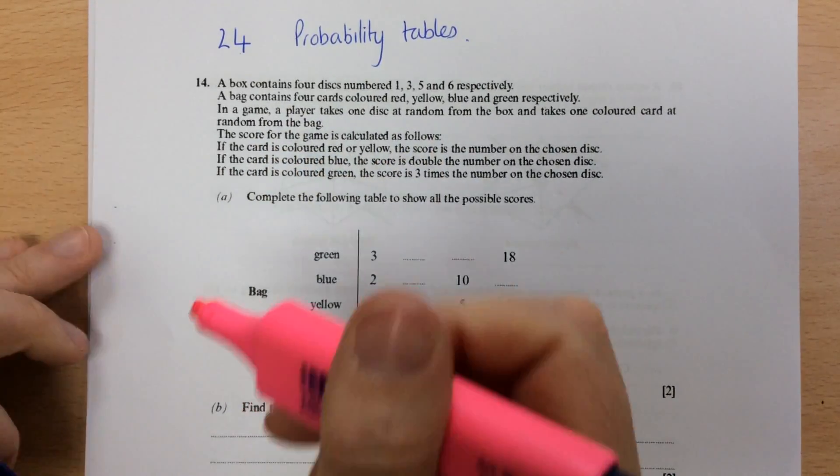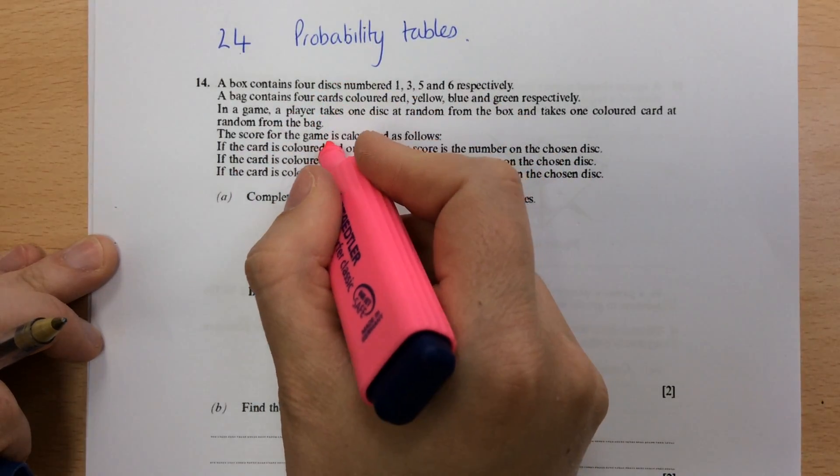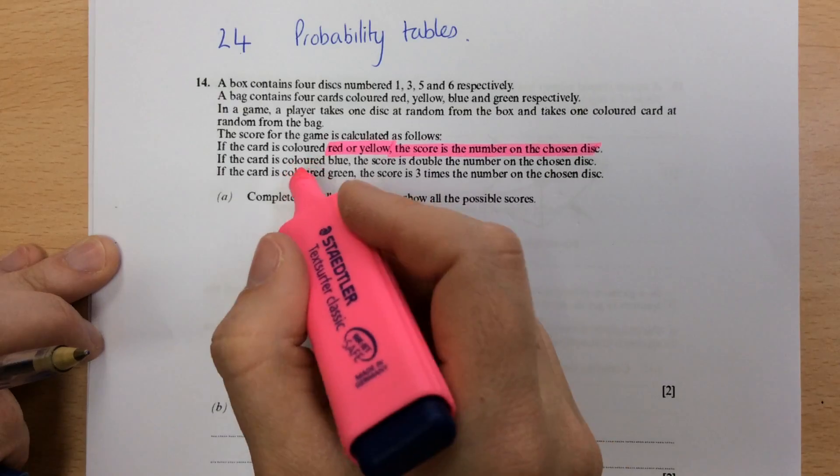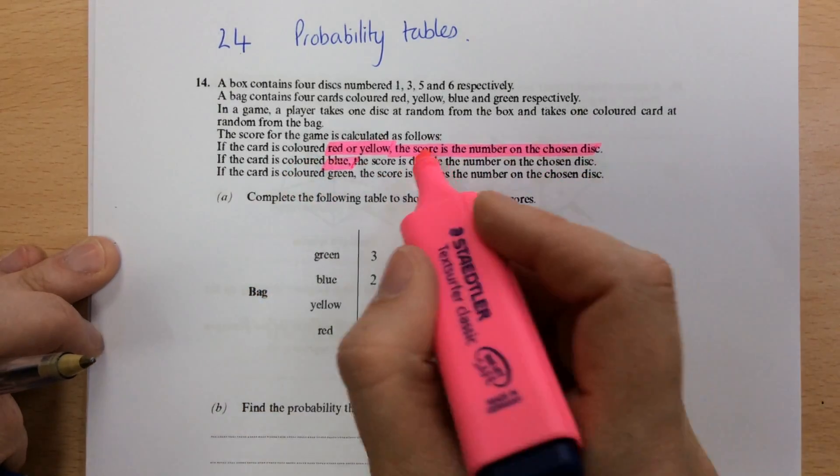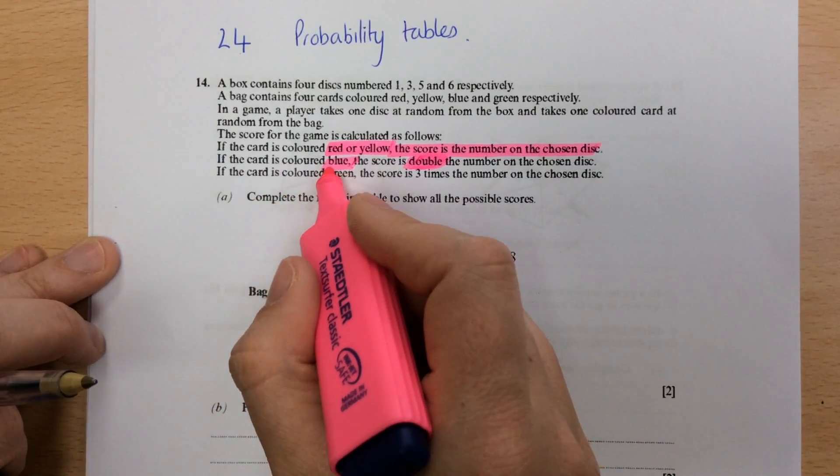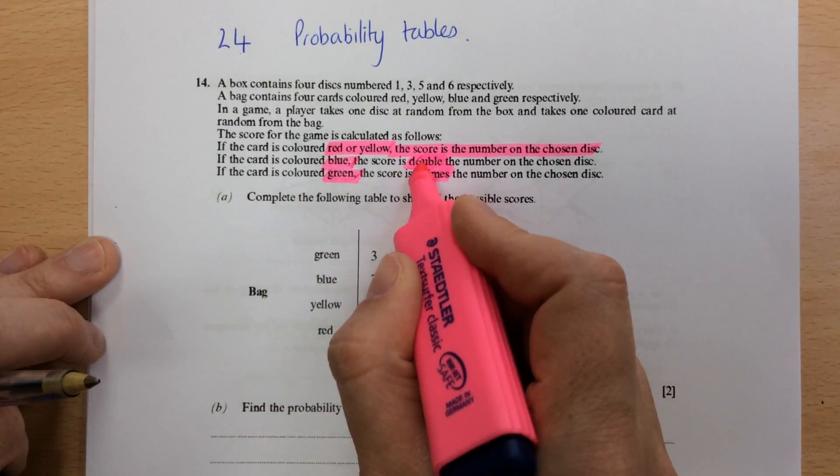So this is the important bit. If the card is coloured red or yellow, the score is the same. If the card is coloured blue, the score is double. And if the card is coloured green, the score is three times.